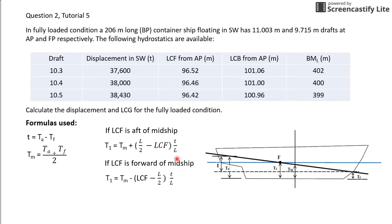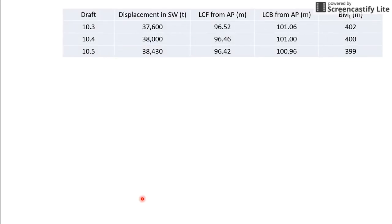The last formula you need to know is for equilibrium to occur: (LCB - LCG) × Displacement = 100 × t × MCT1cm. Normally you are required to find your LCG from this formula. Let's go on with the solutions to this question.